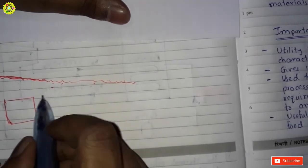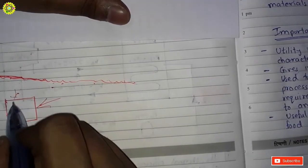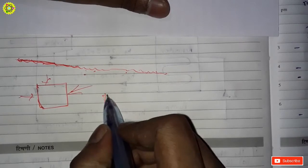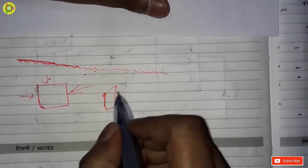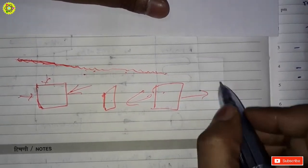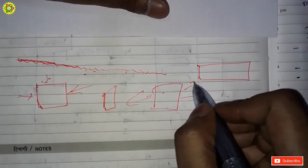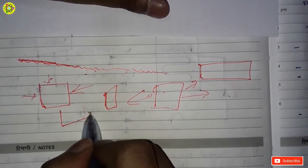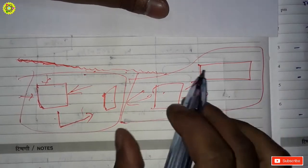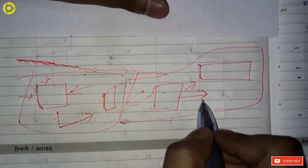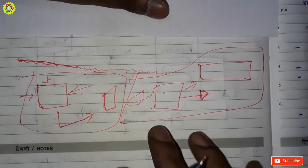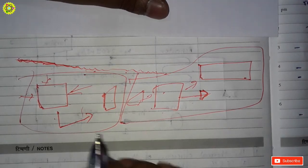Now suppose this is a food particle and some forces are applied on it. Because of those forces it deforms — either it gets compressed, or if there is a pulling action it gets elongated. This is called deformation.